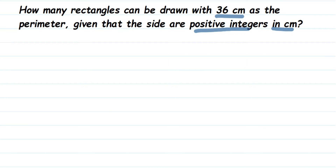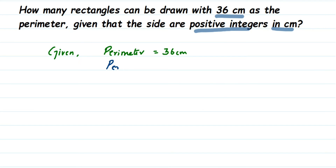Positive integers means the measurement of length and breadth are positive numbers, in centimeters. So let us find out what we can do here. The perimeter is given as 36 centimeters, and we are going to write down the formula. The perimeter of a rectangle is 2 into (L plus B), where L is length and B is breadth.